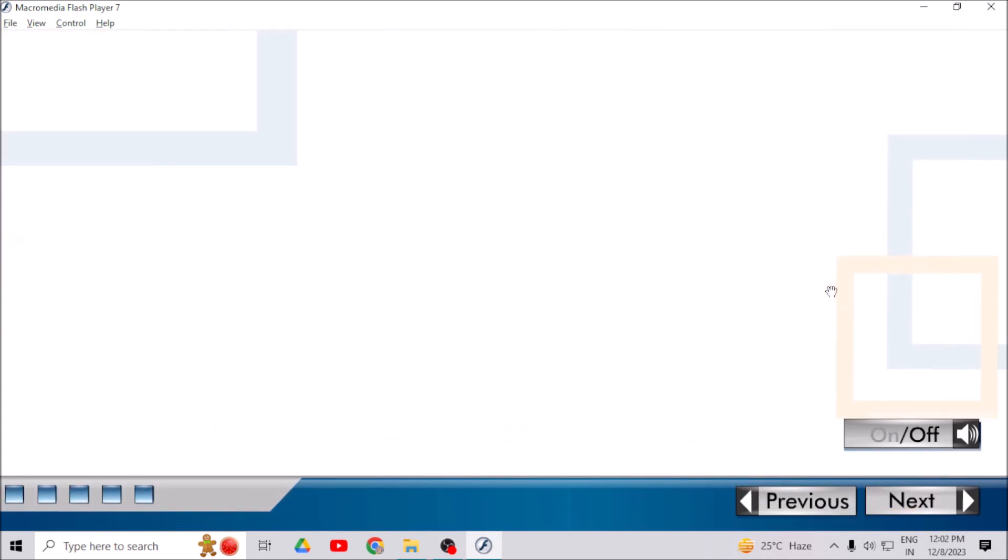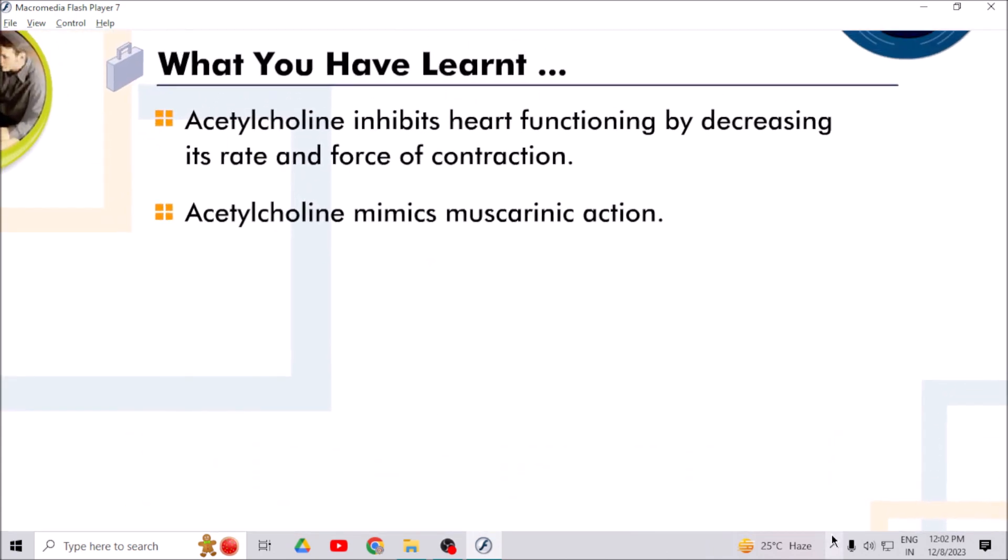You have learned that acetylcholine inhibits heart functioning by decreasing its rate and force of contraction. Acetylcholine mimics muscarinic action.